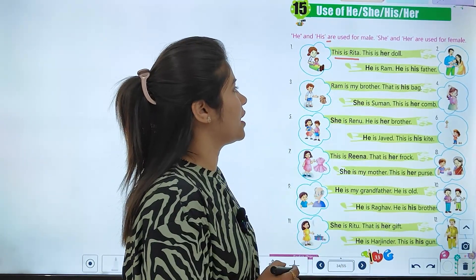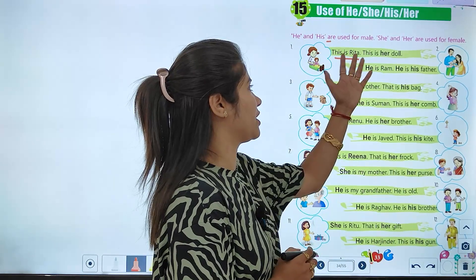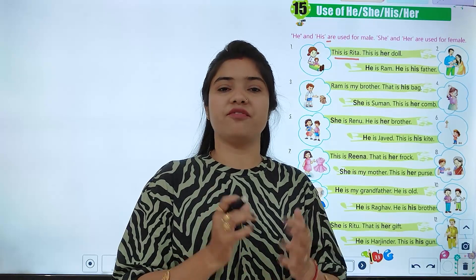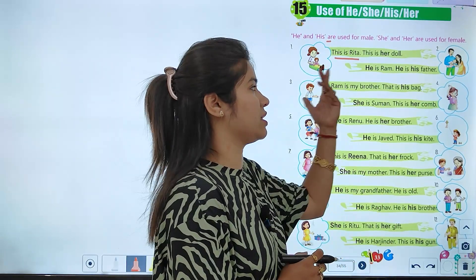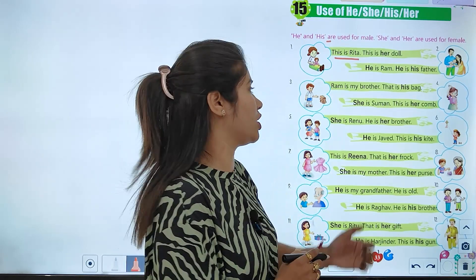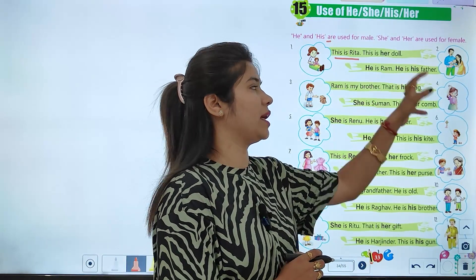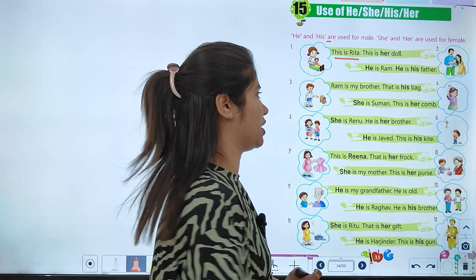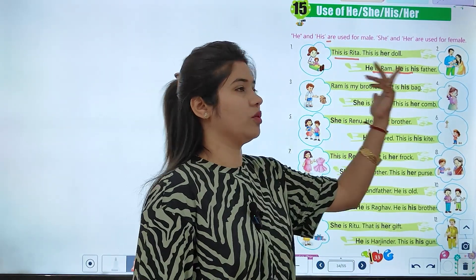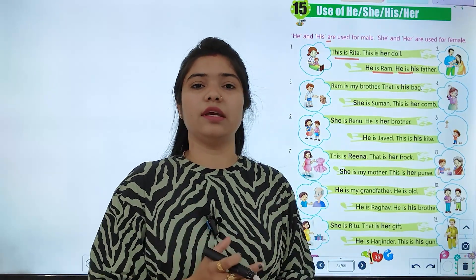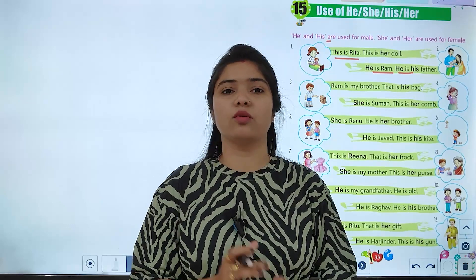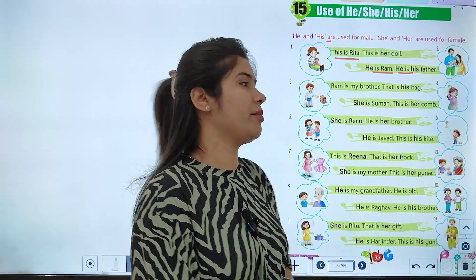This is Rita. This is her doll. She is Rita and this is her doll. So if we talk about a female person, we will use her for the object. For male, we will use his. If there is something belonging to her or about her object, we will use her.